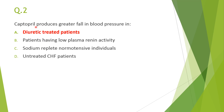The second question: captopril, which is an ACE inhibitor, produces the greatest fall in blood pressure in a diuretic-treated patient. When diuretics and captopril are given in combination, the diuretic causes a fall in sodium, which increases renin activity. More renin activity leads to more angiotensin 1 generation, and then subsequent inhibition by captopril. So the correct answer is a diuretic-treated patient.